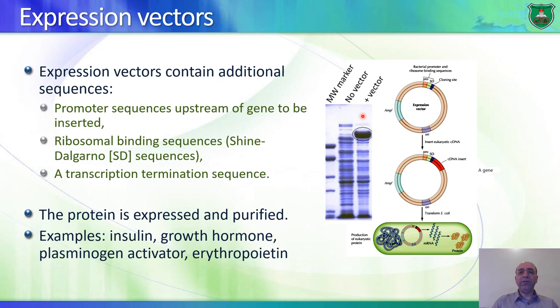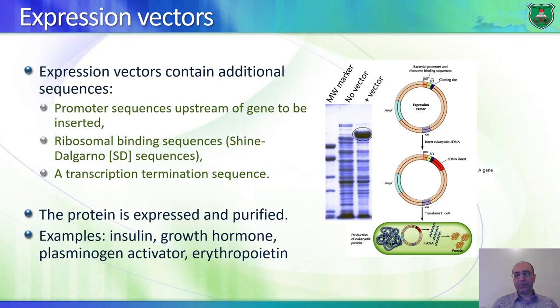Here we see gel electrophoresis for proteins — same concept as DNA gel electrophoresis. This lane shows bacteria with no vector, so there is no expression of the protein of interest. These show proteins separated according to size — large proteins at top, small at bottom. The other lanes show proteins from bacterial cells containing an expression vector for a certain protein, and you can see the protein of interest as an intense band.